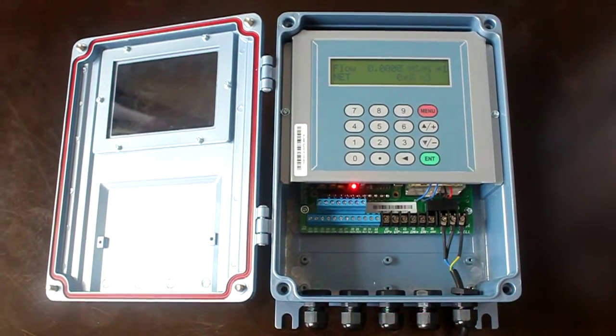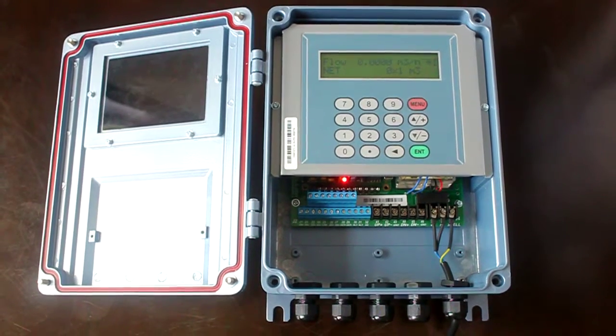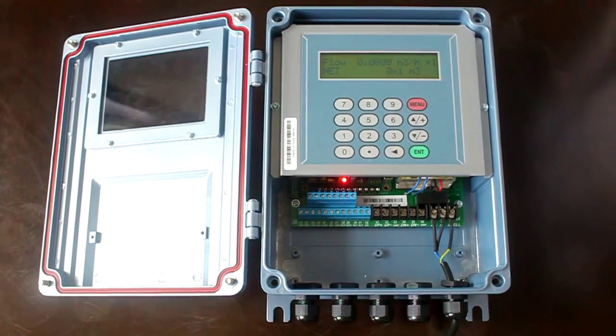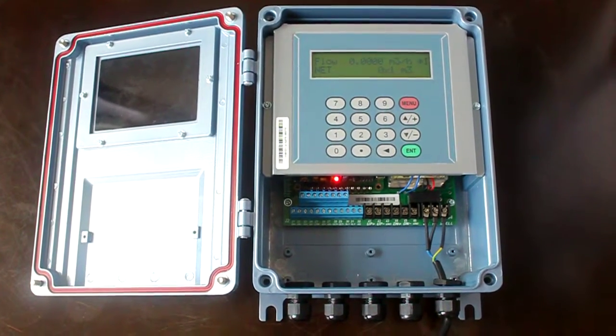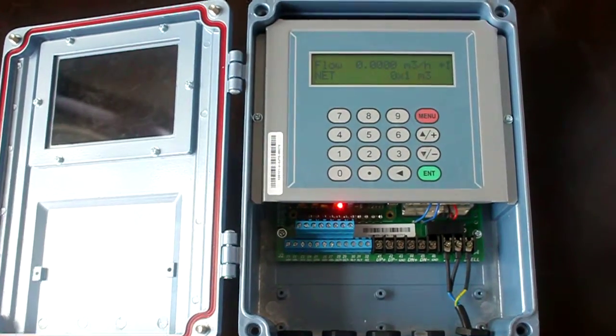I will show how to operate the wall ultrasonic flow meter. This is the first page. The first line is instantaneous flow rate. The second line is net flow.